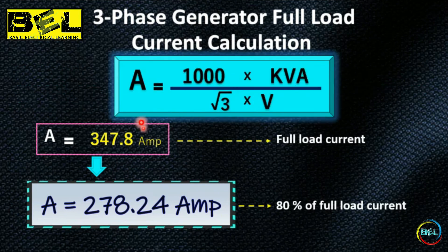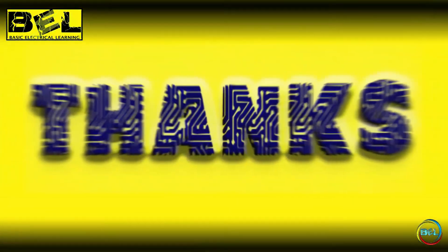Here is the formula for three-phase AC generator current calculation. You can use this formula to calculate the current for any voltage and power rating. In our example, we found the safe current is 278.24 ampere. You can put in the values of your own generator — different voltage and power — to calculate the maximum safe current. Thank you.